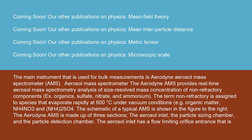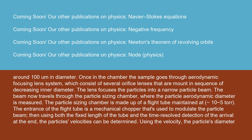The aerosol inlet has a flow-limiting orifice entrance around 100 mm in diameter. Once in the chamber, the sample goes through an aerodynamic focusing lens system, which consists of several orifice lenses mounted in sequence of decreasing inner diameter that focuses the particles into a narrow particle beam. The beam then travels through the particle sizing chamber, where the particle aerodynamic diameter is measured. The particle sizing chamber is made up of a flight tube maintained at 10⁻⁵ Torr. The entrance of the flight tube has a mechanical chopper used to modulate the particle beam, and using the fixed length of the tube and the time-resolved detection of arrival at the end, the particle's velocity and diameter are obtained.